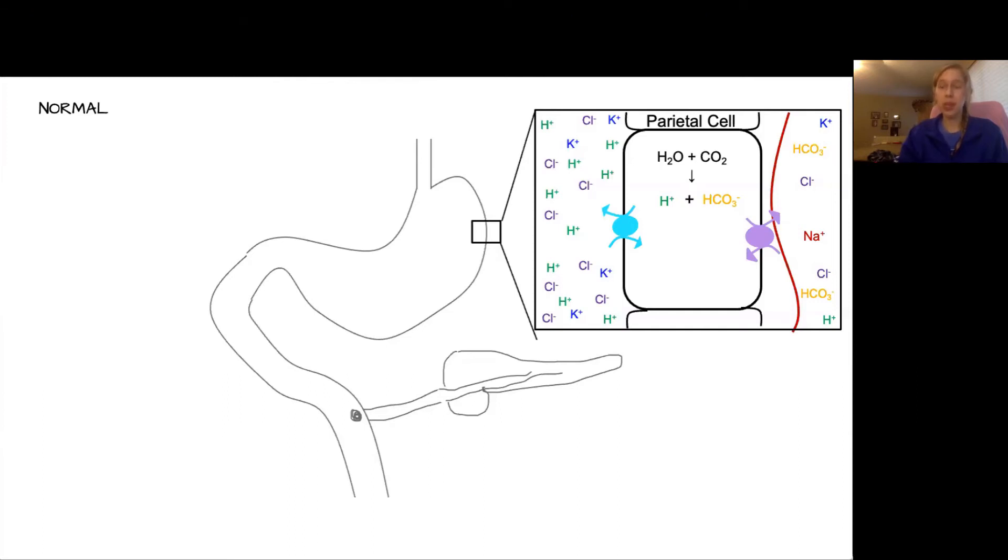This is a really important reaction that we're going to see repeated throughout this entire physiology series. The hydrogen ion and bicarbonate are then pumped out into opposite sides of the cell. The hydrogen is pumped into the stomach lumen, and the bicarbonate is pumped into the blood.